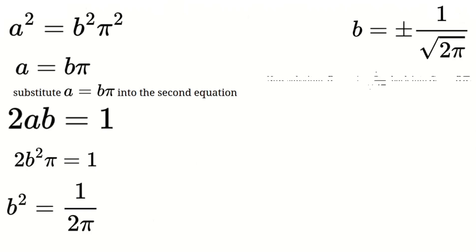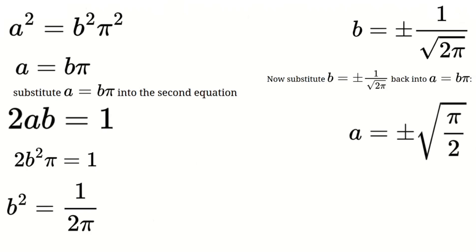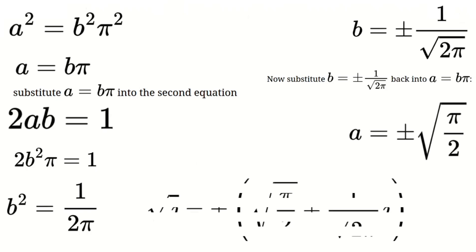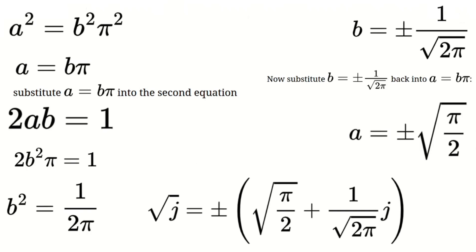Substituting b back into a = b·π, we get a equals ±√(π/2). So, using the direct method, we found that the square root of j is plus or minus √(π/2) plus 1/√(2π) times j.